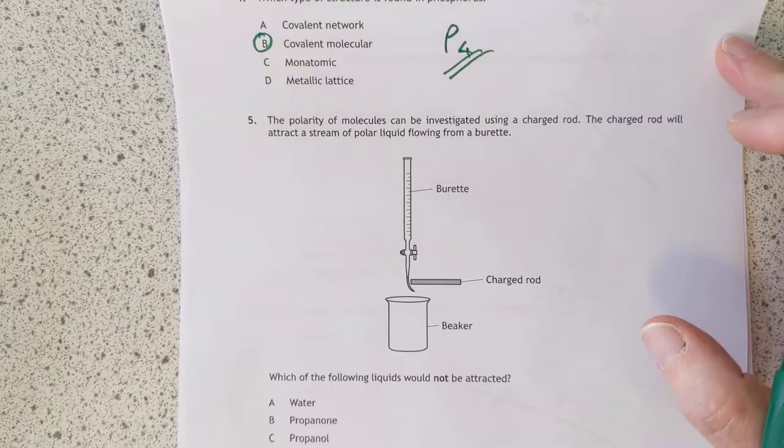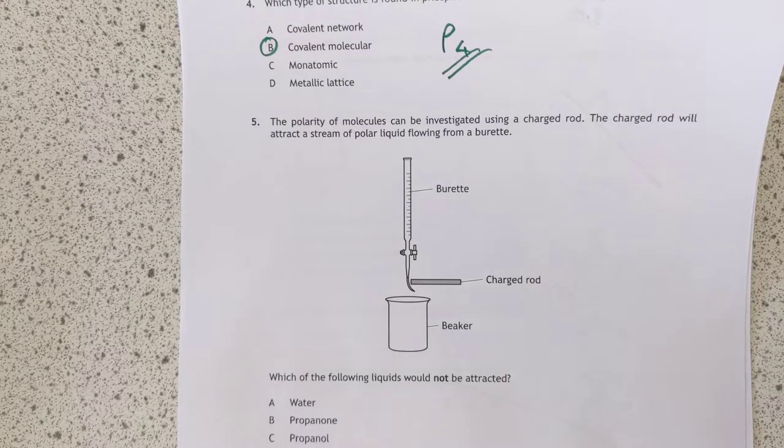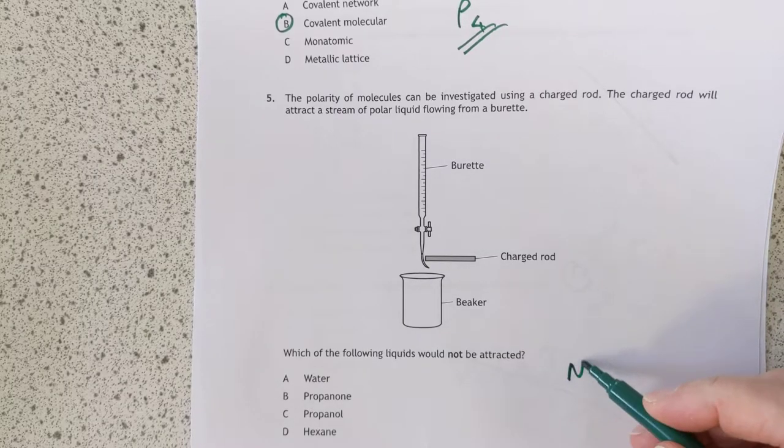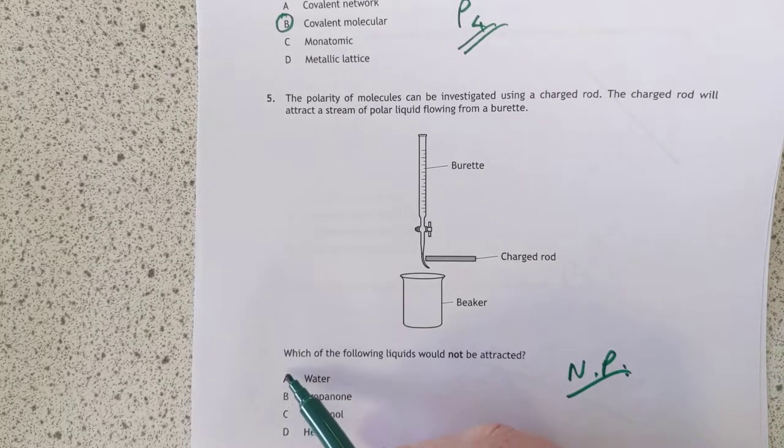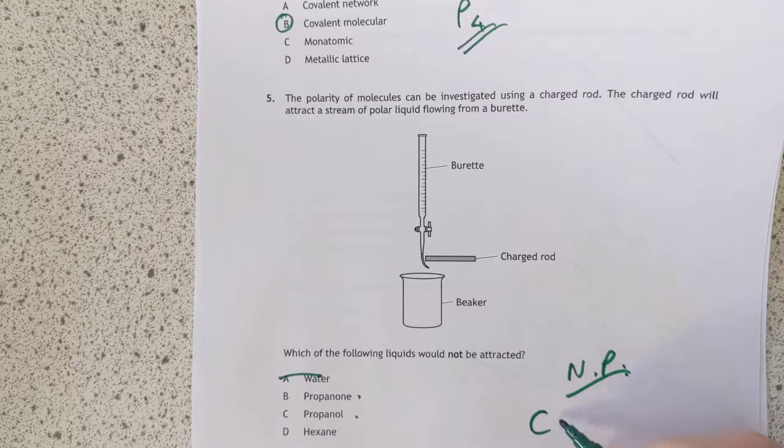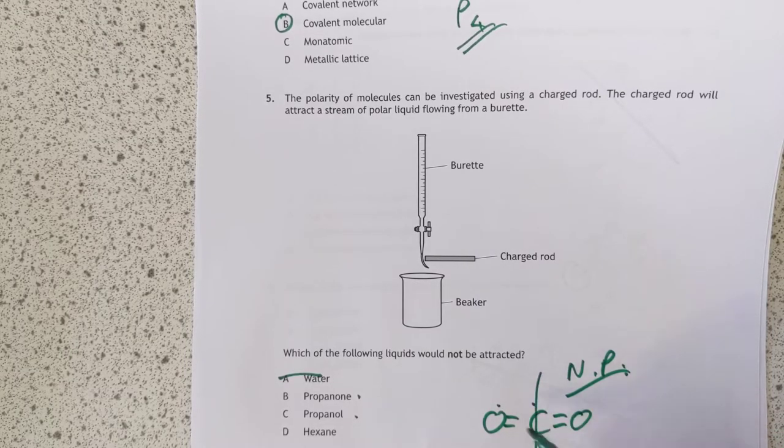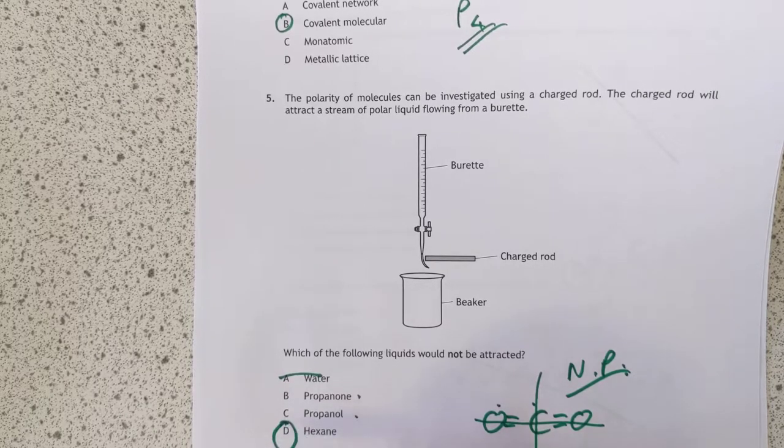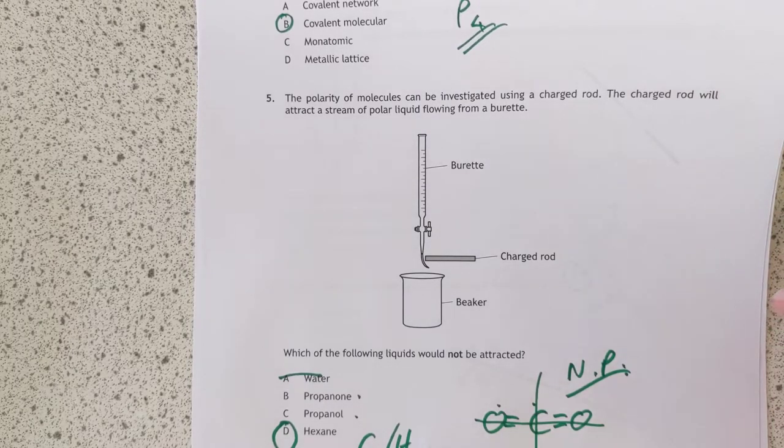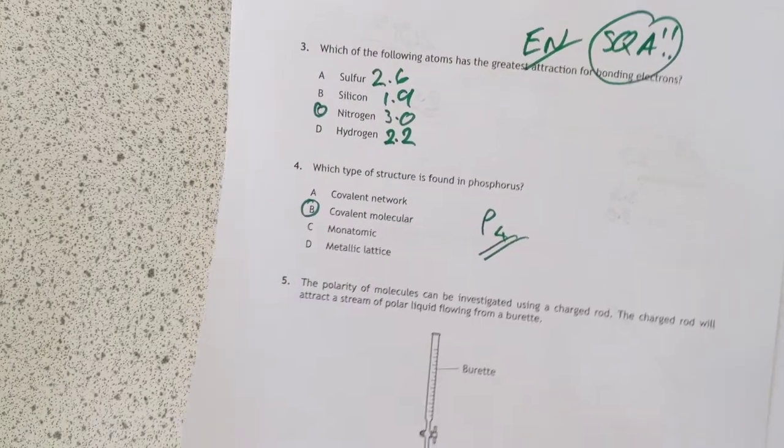Number five. Polarity of molecules can be investigated using a charged rod. The charged rod will attract a stream of polar liquid flowing from a burette. Which of the foreign liquids would not be attracted? So which is non-polar? That's what we're looking for. It's definitely not water. These all have oxygen in them, which would imply that there is a decent electronegativity difference, although you can't rely purely on that. For example, carbon dioxide has a decent electronegative difference, but because it's completely symmetrical, it is non-polar. However, whenever you see an alkane, then C and H have, that's 2.6 now and 2.2, it's not really big enough delta EN to be considered polar, so therefore, that's the answer. Look for the alkanes or hydrocarbons. They are non-polar.